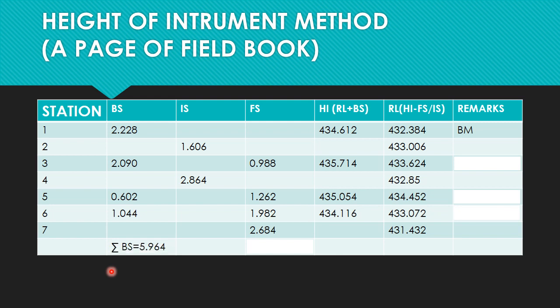Now let us find the summation of back sights, which comes to 5.964, and the summation of foresights, which comes to 6.916. Before closing this page, let us identify the turning points — a turning point is where both foresight and back sight are measured. In this problem, stations 3, 5, and 6 are our turning points, since both foresight and back sight are observed at those points.